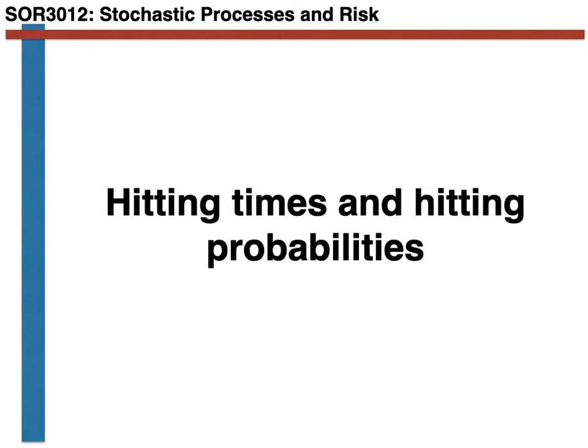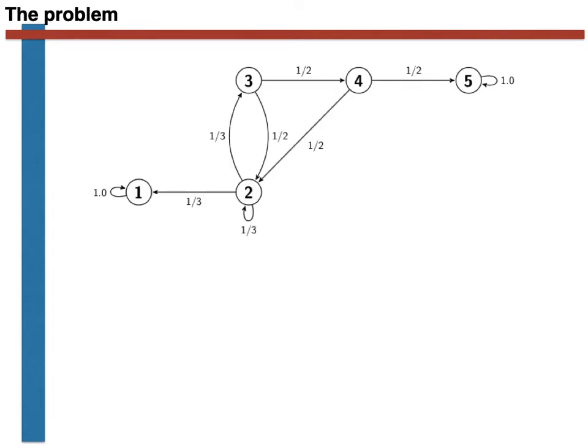In all the exercises prior to this one, we have considered the Markov chain with the transition graph shown here. As has been discussed in those videos, states 1 and 5 in this chain are recurrent and absorbing. States 2, 3 and 4, by contrast, are all transient.